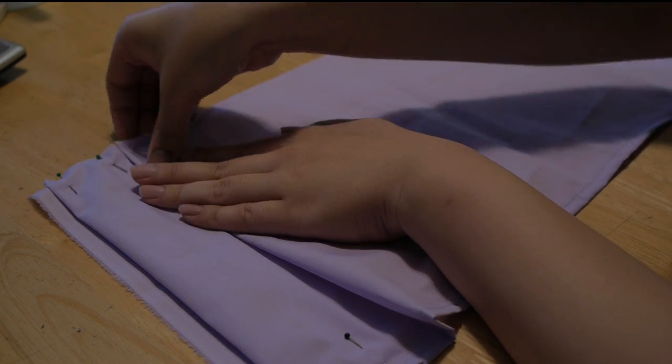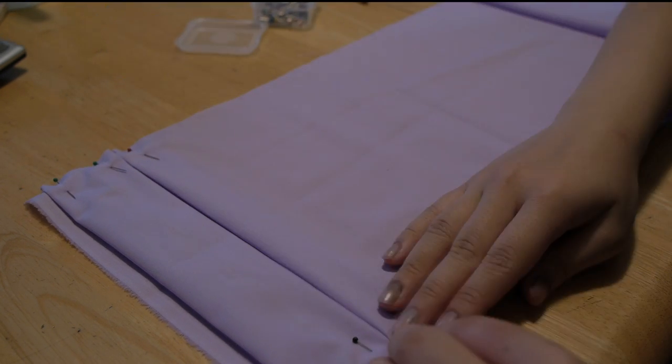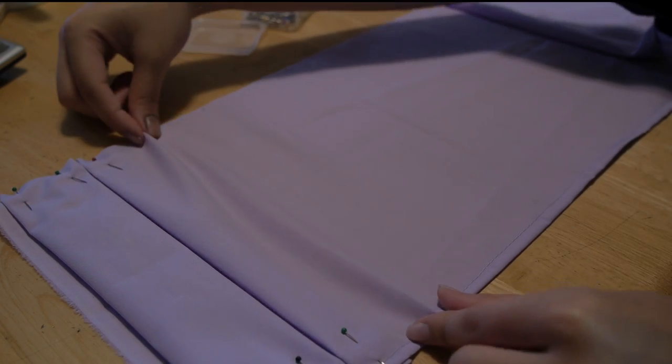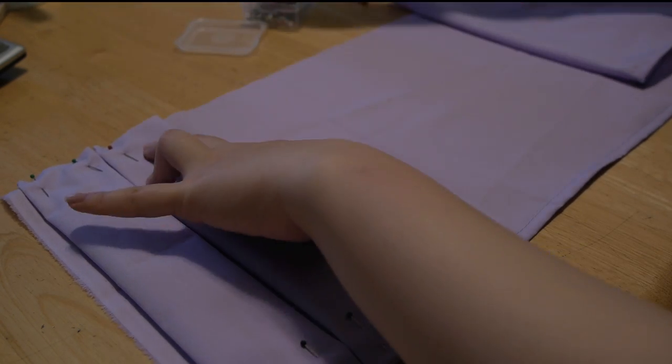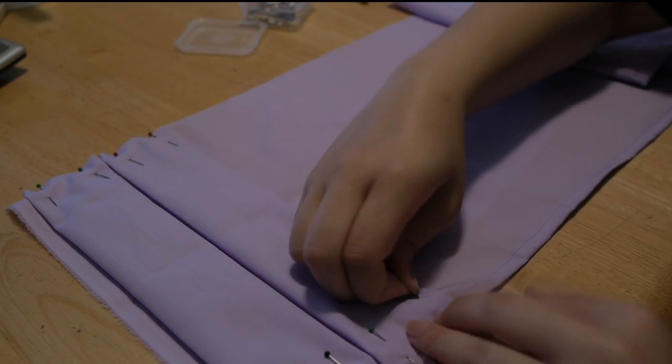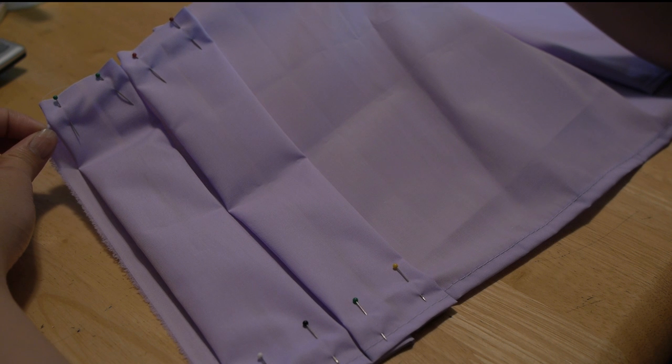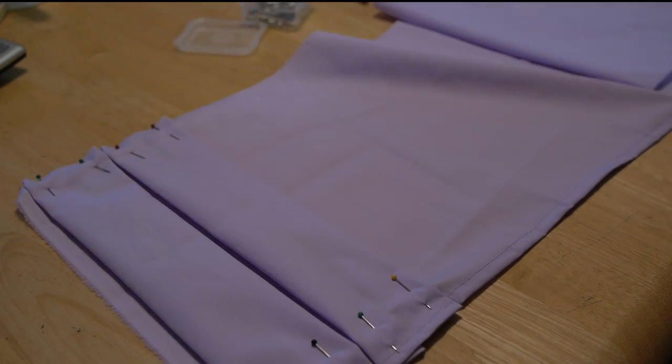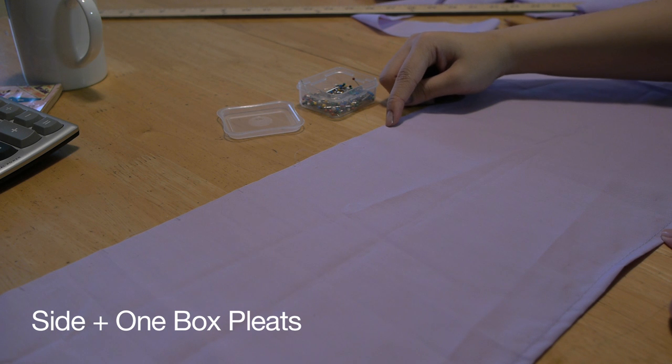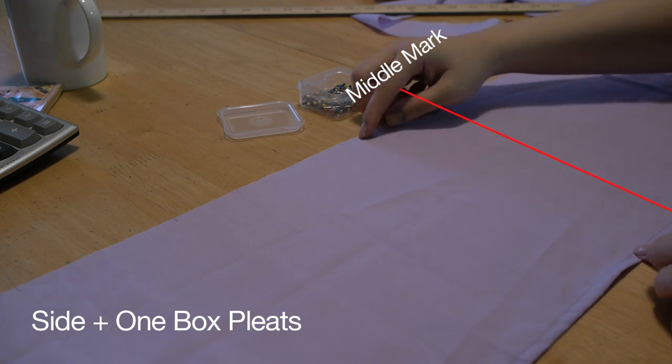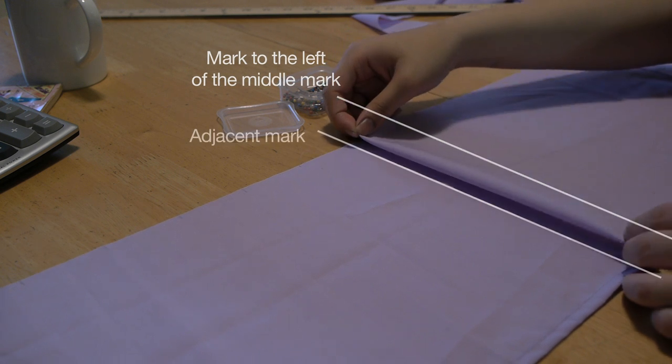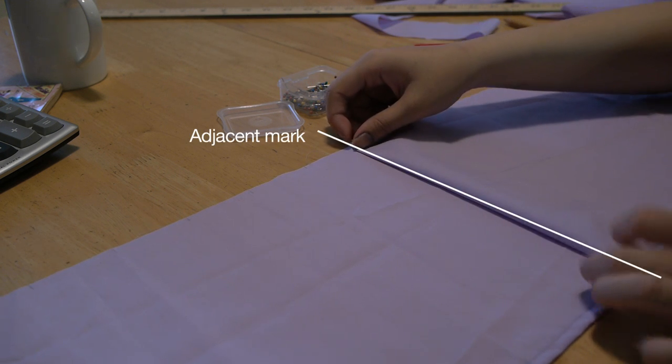For side pleats with one box pleat, you'll start off at the middle mark. Take the mark to the left of the middle mark and bring it to the adjacent mark. Pin into place.